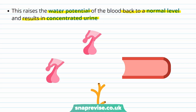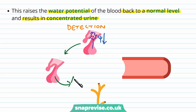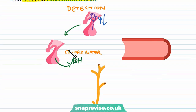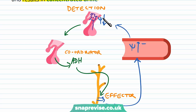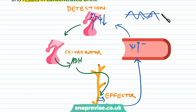To summarise this feedback loop: the osmoreceptors detected a low water potential (detection); ADH was released from the posterior pituitary gland (co-ordinator); ADH then acted on the collecting ducts (effector), allowing water to be absorbed into the medulla and then into the blood, raising the water potential back up to a normal level. This resisted the problem of having a lower water potential than normal — the negative feedback loop brought it back up to an optimal level.